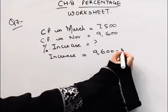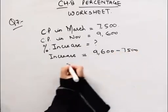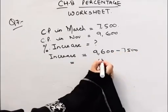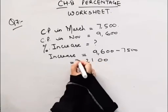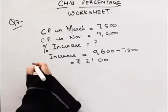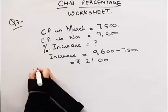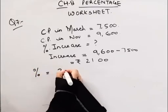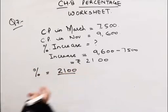March to November, we will find the difference to see how much the increase is. That means Rs. 2,100 is the rise in the cost price. Now, we have to find what percentage. How do we find percentage? Obtained value divided by total value.